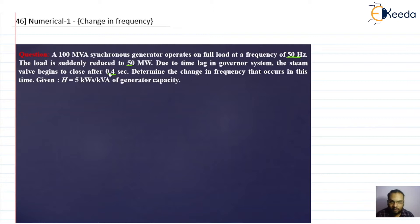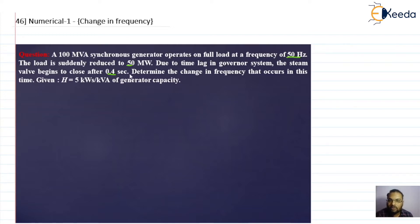When the load decreases, speed increases. So in order to control the speed, we need to close the gate or reduce the steam input to the turbine — that is what the governor does. The valve begins to close, but it will take some time. That is the time constant of the speed governor, which we have considered while discussing the dynamic response.